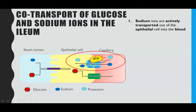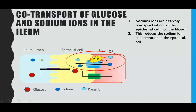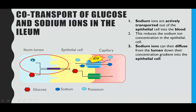This first step is actually also co-transport because as that happens, a potassium ion is transported from the blood into the epithelial cell — but that's extra detail not focused on within the specification. So: sodium ions from the epithelial cell are actively transported into the blood, exactly as we just described — ATP attaches, hydrolyzes, and that enables sodium ions to move from the cell into the blood. This creates a much lower sodium ion concentration within the epithelial cell compared to the lumen of the ileum, meaning sodium ions in the digested food can move by facilitated diffusion into the cell down their concentration gradient.